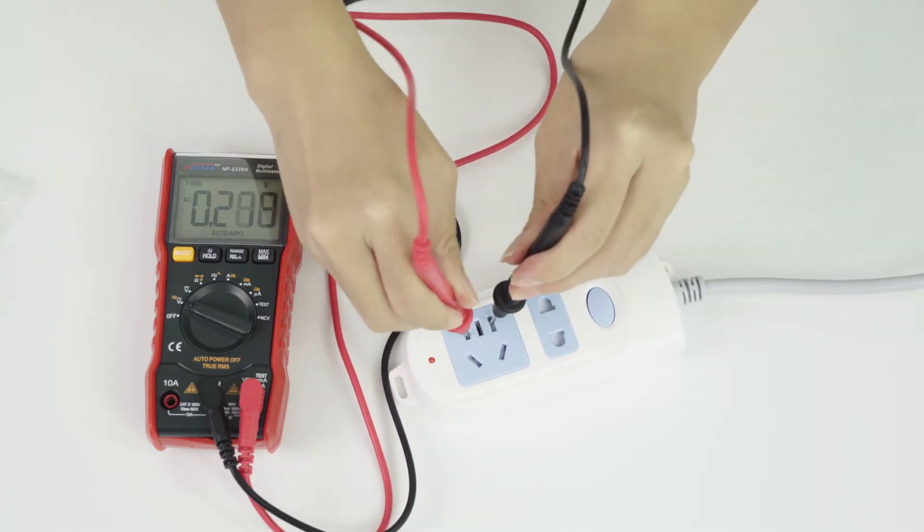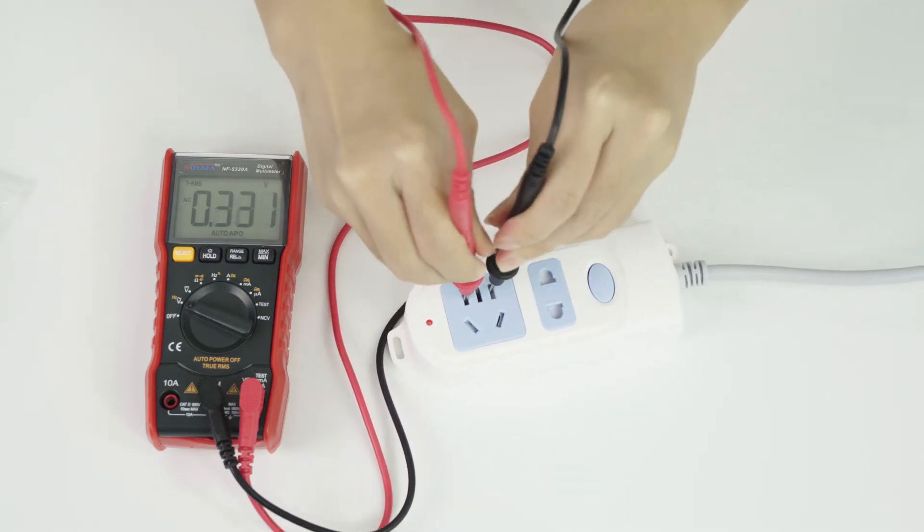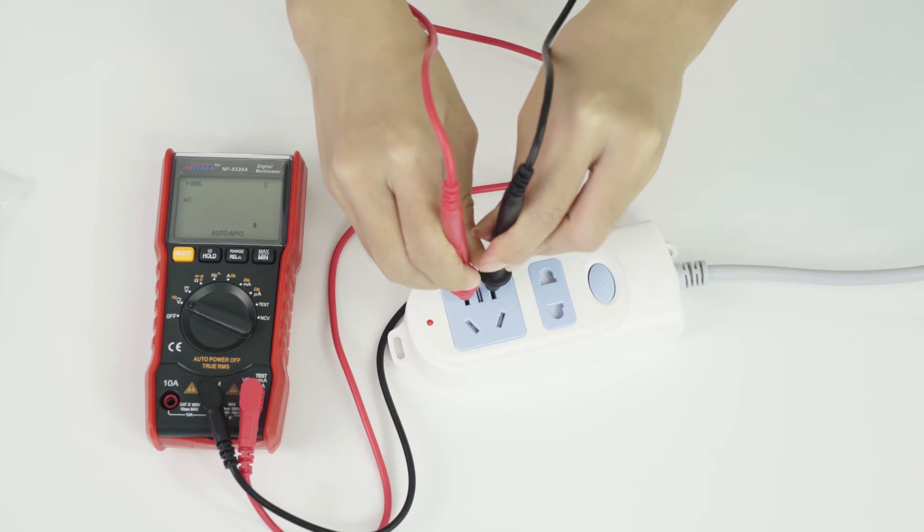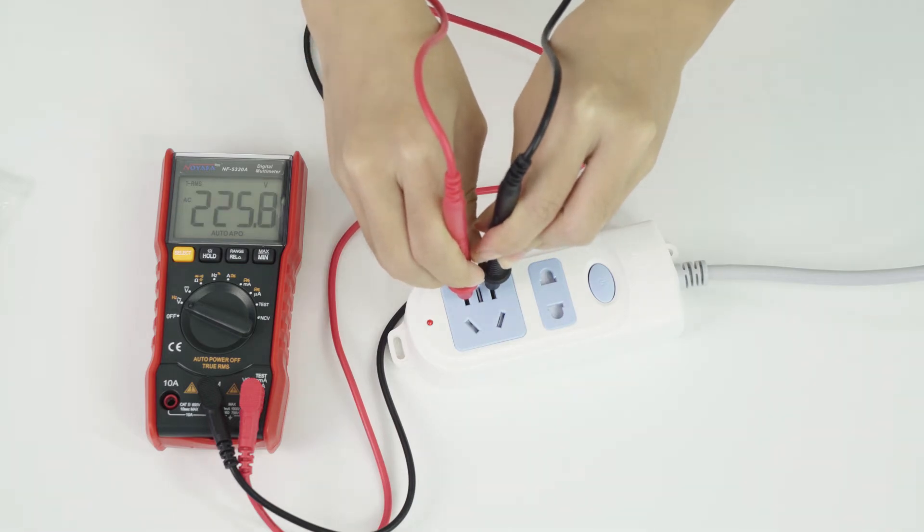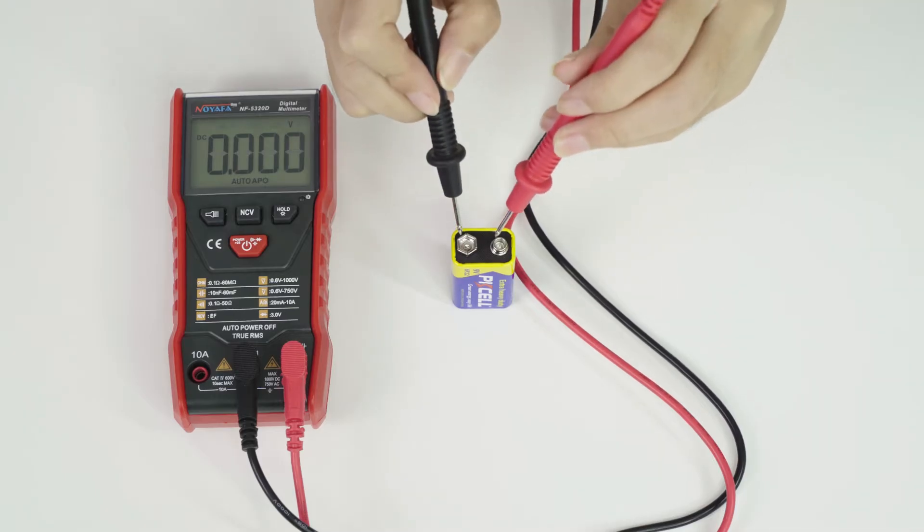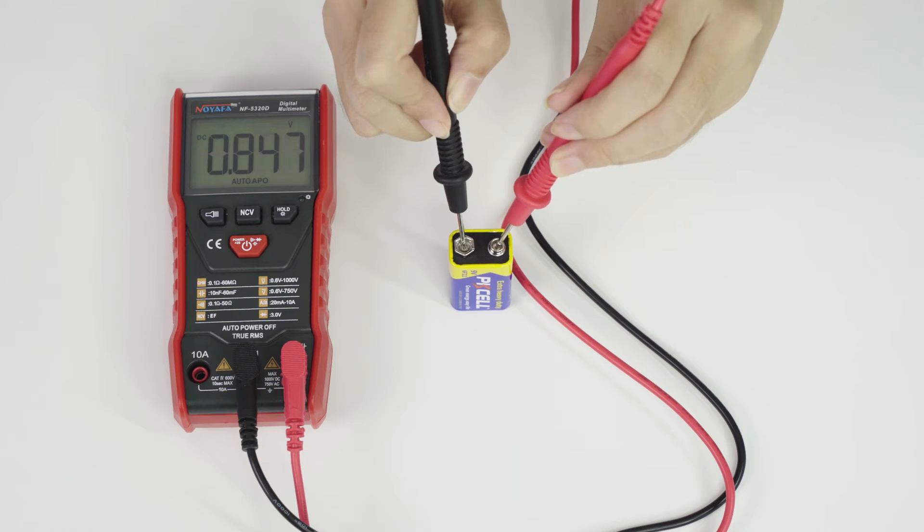The first function is that it's a multi-function multimeter. It has DC and AC voltage, resistance, capacitance, and frequency measurement. It has an on and off buzzer, diode, touch button, and NCV flashlight.